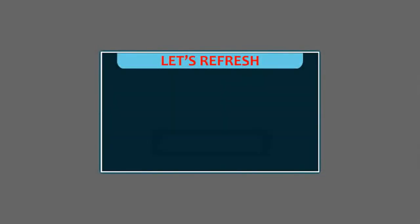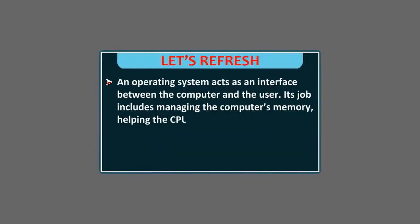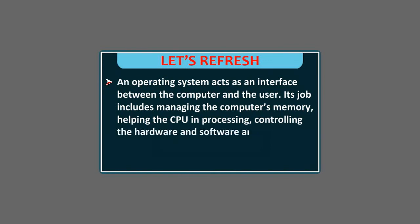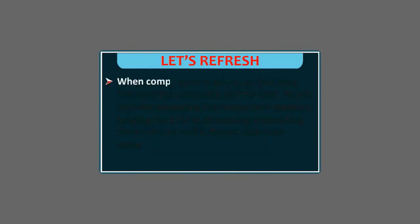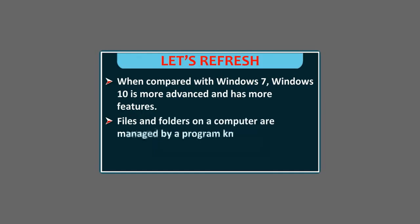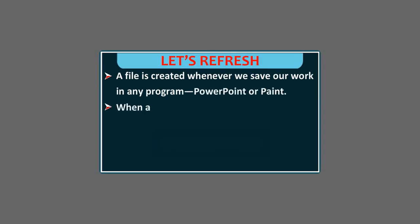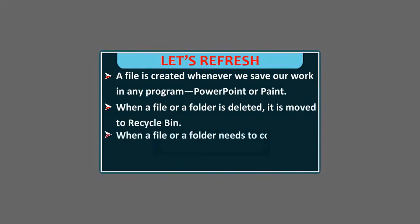Let's refresh. An operating system acts as an interface between the computer and the user. Its job includes managing the computer's memory, helping the CPU in processing, controlling the hardware and software and much more. When compared with Windows 7, Windows 10 is more advanced and has more features. Files and folders on a computer are managed by File Explorer. A file is created whenever we save our work in any program, like PowerPoint or Paint. When a file or folder is deleted, it is moved to Recycle Bin. When a file or folder needs to be copied to another location, the Copy and Paste option is used.